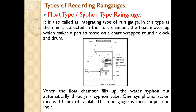The float type rain gauge, also called siphon type or integrating type rain gauge, collects rain in a float chamber where a float moves up, causing a pen to move on a chart wrapped on a clock drum. When the float chamber fills up, the water siphons out automatically through a siphon tube — one siphonic action corresponds to 10 mm of rainfall. This rain gauge is most popular in India and is found at most Indian Meteorological Department stations, providing very accurate rainfall measurements.